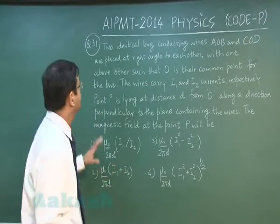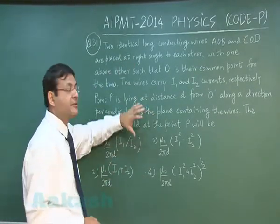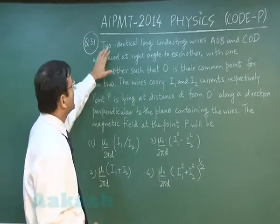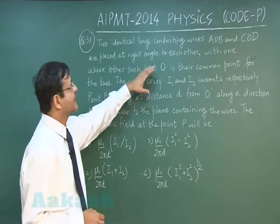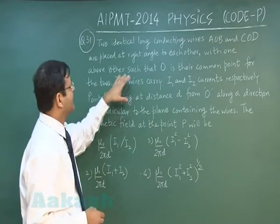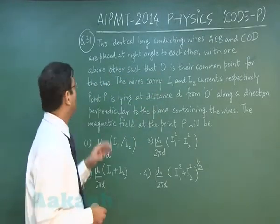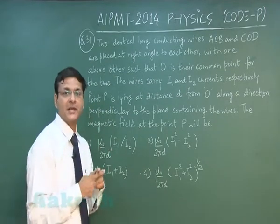Now, in the next question that is 31, which is related to magnetic field due to a long wire. Two identical long conducting wires AOB and COD are placed at right angle to each other with one above another such that O is their common point for the two. That means they have been arranged in the form of a plus.